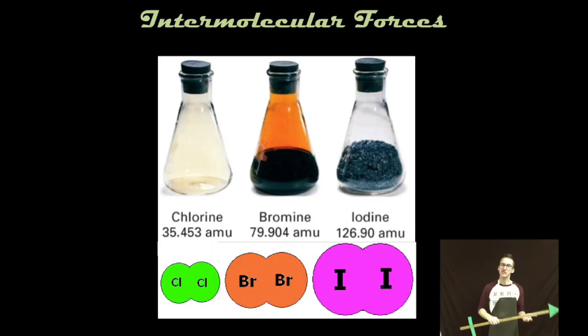In fact this is why we see chlorine in the gas phase at room temperature, bromine in the liquid phase, and iodine in the solid phase at room temperature. As you move from chlorine to iodine you get progressively larger numbers of electrons.